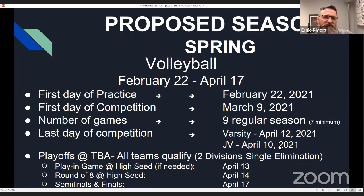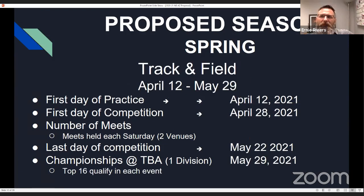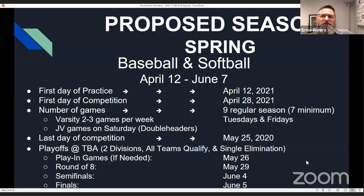Cross country would also run February 22nd to April 17th. We've dubbed these spring sports since they're not in the fall — spring football, spring cross country, spring volleyball. Track and field would take place April 12th to May 29th, with the championship on May 29th at a site to be determined — top 16 qualify for each event. Spirit line would also have competition opportunities at three significant dates lined up with the championships. Baseball and softball extend a bit further, with the championship on June 5th — a play-in game if necessary, then a round of eight, semi-finals, and finals.